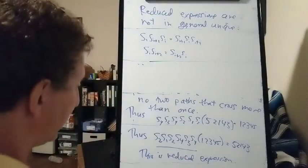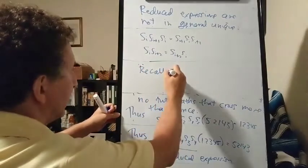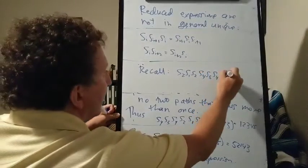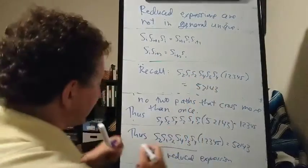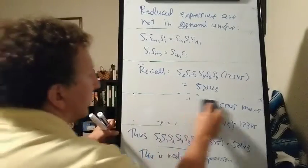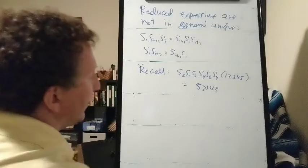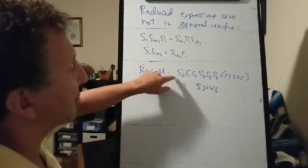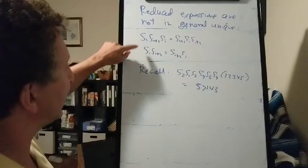So let's put up the reduced expression we found for 5, 2, 1, 4, 3. So we said that S2, S1, S2, S4, S3, S4 of 1, 2, 3, 4, 5 equals 5, 2, 1, 4, 3. It turns out, and this is kind of a difficult theorem to prove, that all of the reduced expressions for this same one-line notation can be obtained from this one just by applying elementary moves to these generators. An elementary move being a replacement of this type or a replacement of that type.